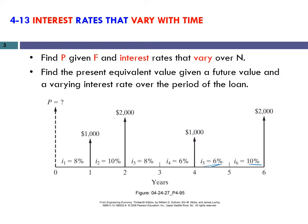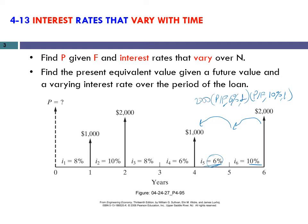To find the value of the 2000 at year six, one year before I need to multiply it by P/F at 10% and 1 period. Then I need to find it one period backward with 6% interest rate, meaning I multiply that value by P/F at 6% and 1 period. This whole multiplication gives the equivalent value of the 2000 at the end of year four.